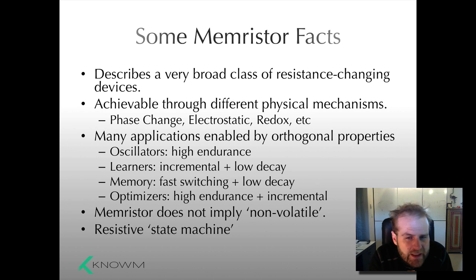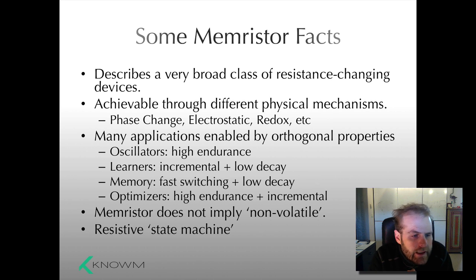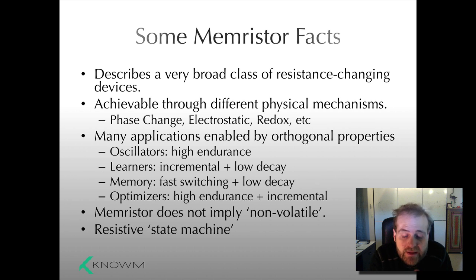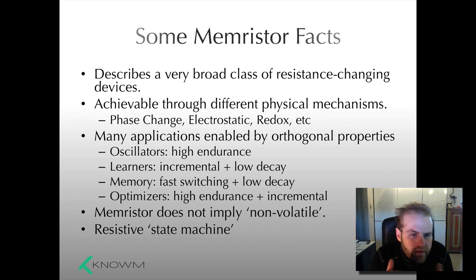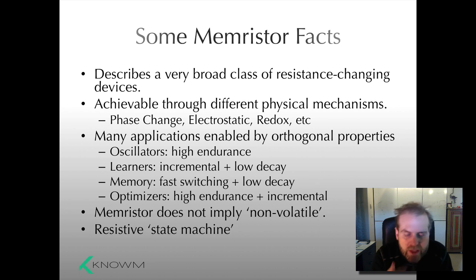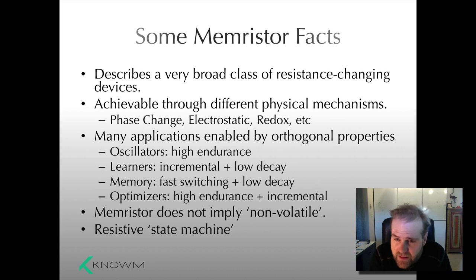And then finally, optimizers. In this case, sort of combinatorial optimization — think of it as the ability to keep a running tally of a probability. We can build circuits that do this. We again need very high endurance because we're constantly incrementing these things, but we don't necessarily need the low decay property, because we only have to retain those summations for small windows at a time, and then the problem or constraint changes. So all of these applications require different properties, and you can achieve them with different types of Memristors — different material stacks, different physical configurations and chemistry.